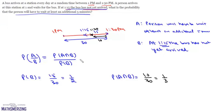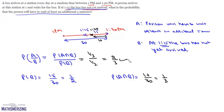Now the conditional probability P(A|B) is P(A intersection B), which is 1 by 3, divided by probability of B, which is 1 by 2. So the required probability is simply 2 by 3, and that is the answer to this question.